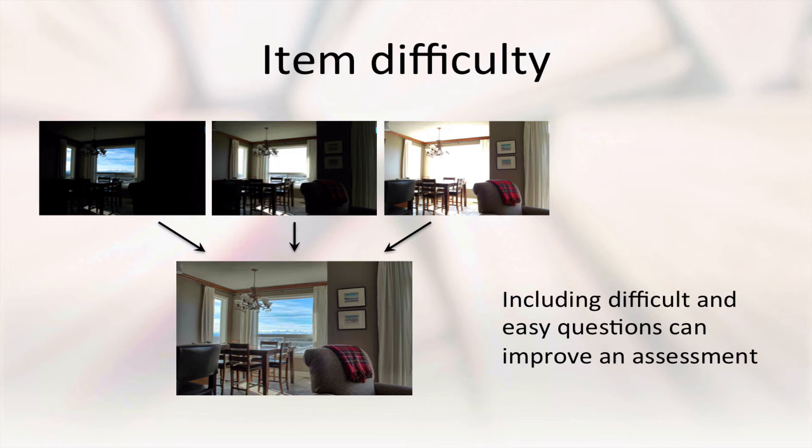Returning to our photography analogy, what we'd really like is to see the details outside the apartment while at the same time capturing what's inside as well, and we can do that using HDR, or High Dynamic Range, photography. In HDR photography, images with low, medium, and high exposure times are combined to give a single image that better represents what a person would see if they were there. Similarly, when we're building classroom assessments, it can be helpful to include some basic questions and some difficult problems, though most items should still be near the ideal difficulty for the type of question used.